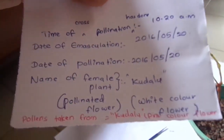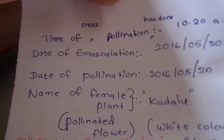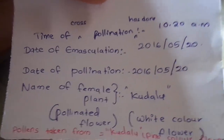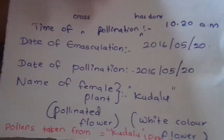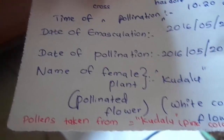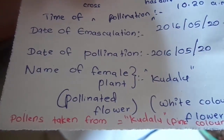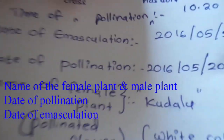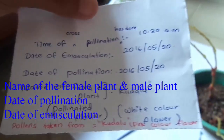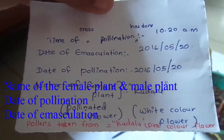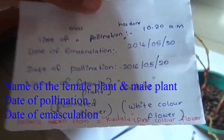Next is to tag and label the flower. Tagging is done to record information about the pollination. The basic information included on a tag is the name of the female plant and male plant, date of pollination, and date of emasculation.